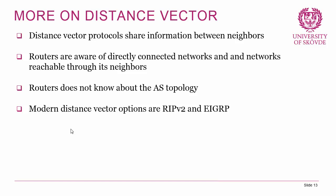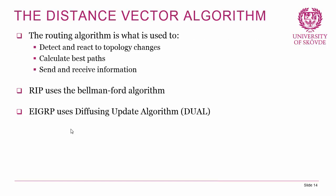Looking at the general distance vector algorithm: a routing algorithm is what is used to detect and react to topology changes, calculate best path, and send and receive information — basically everything that has to do with the operation of the routing protocol. RIP uses a routing algorithm called the Bellman-Ford algorithm. EIGRP uses the Diffusing Update Algorithm, or DUAL, which we're going to explore in detail in a later section.